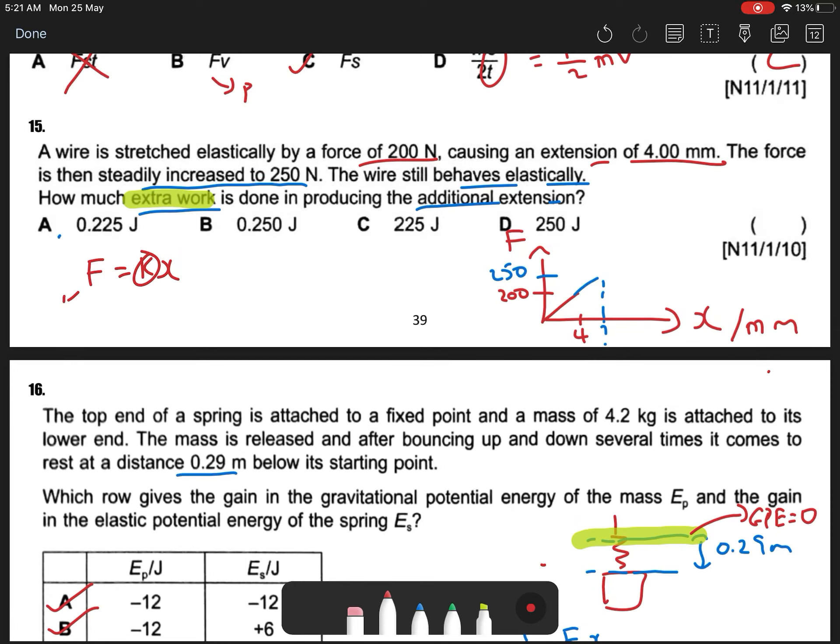So F is 200, your extension is 4 times 10 to the negative 3. So your spring constant will be k equal to 50,000.